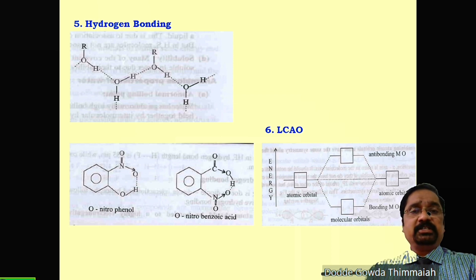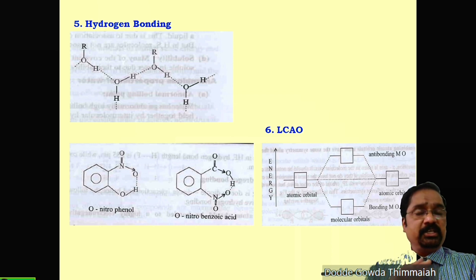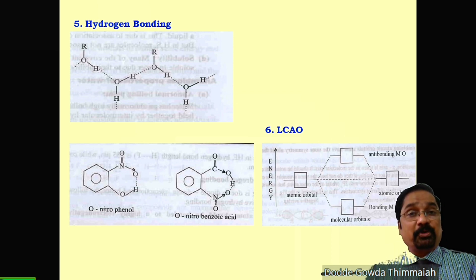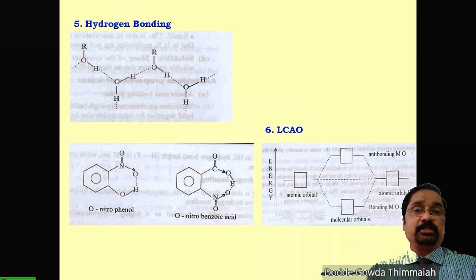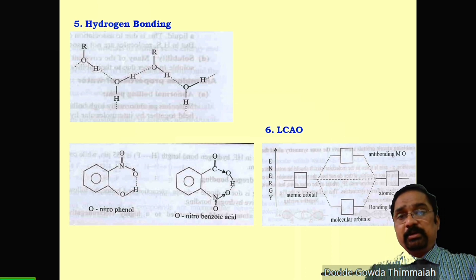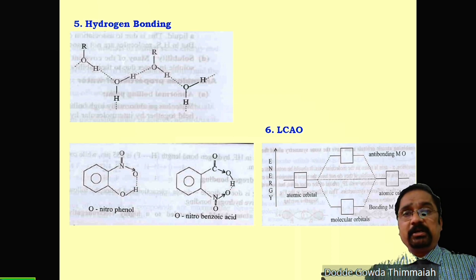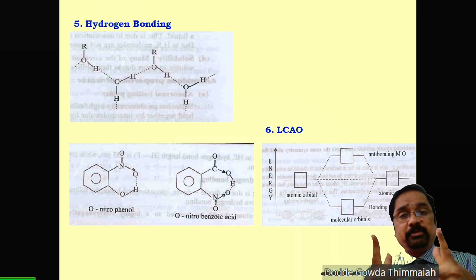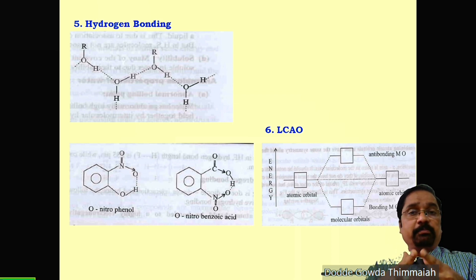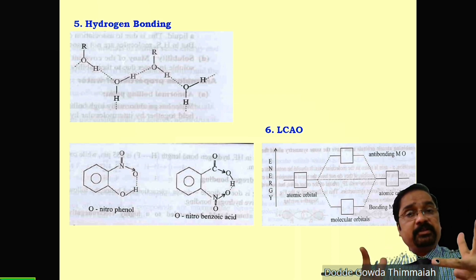The last concept is LCAO — Linear Combination of Atomic Orbitals. This theory says atomic orbitals combine to give molecular orbitals, provided they satisfy certain conditions: atomic orbitals with similar energy combine; the number of atomic orbitals combined equals the number of molecular orbitals formed; and atomic orbitals with similar symmetry or direction can combine. For example, Px can combine with Px, Py with Py, Pz with Pz — but Px of one atom cannot combine with Py of another.